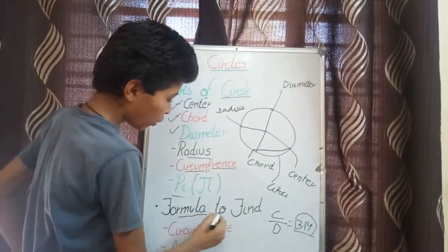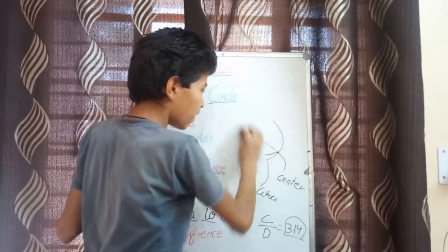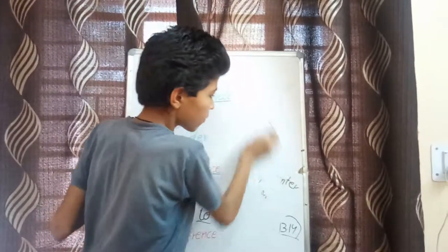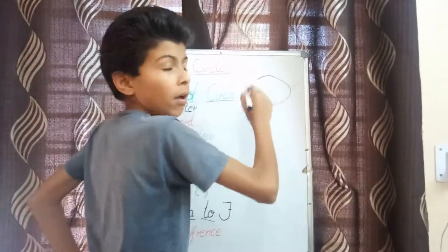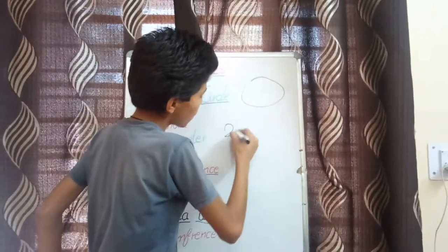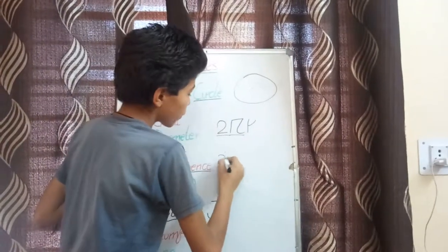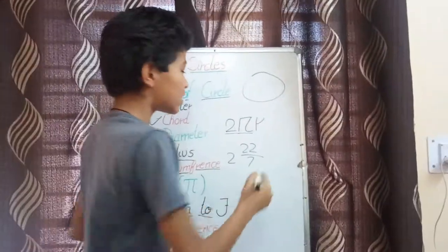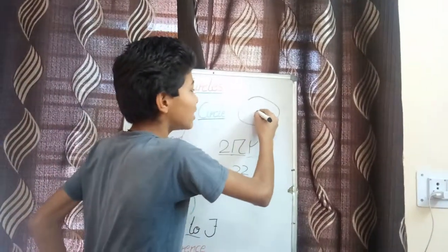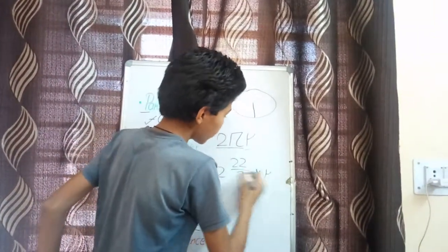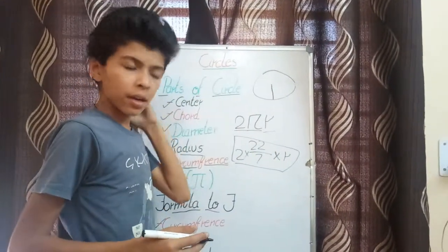Now let's move to the formula to find the circumference. How can we find the circumference? The circumference is the boundary of the circle. Its formula is 2πr, where 2 means 2, π means 22/7 — if you calculate that, it gives a value of approximately 3.14 — and r stands for the radius of the circle. So the formula 2πr is used to find the circumference of the circle.